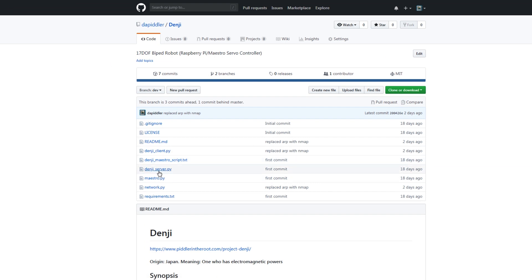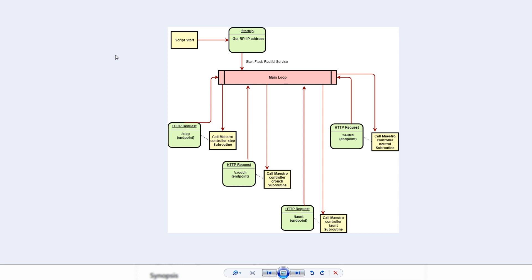So let's dig into the server and client scripts. So at a high level, the server.py is essentially a REST API. If we look through this workflow, when we initiate the script, the script will go ahead and pull the Raspberry Pi's IP address, and then we'll use that to start the Flask RESTful service. And essentially what I've done here is I've mapped different endpoints to call different subroutines defined in that Maestro text file. So for example, if we hit the /step endpoint, it calls the step subroutine. So this will make Denji take a step. And I've done that for all these other endpoints as well. So you have like the crouch endpoint, the taunt, and the neutral position. And they all call these corresponding subroutines.